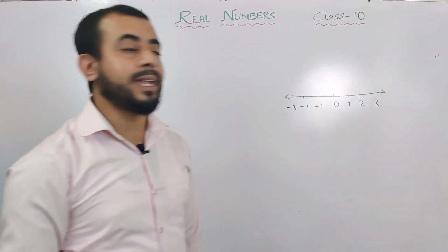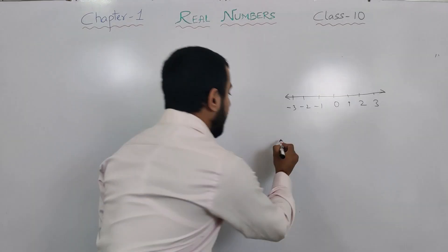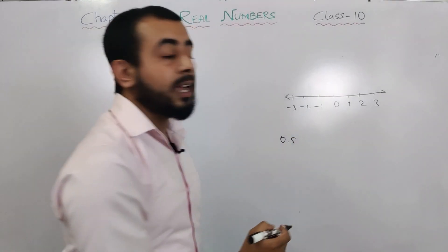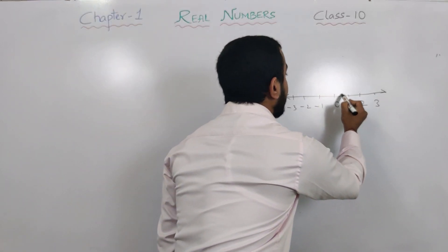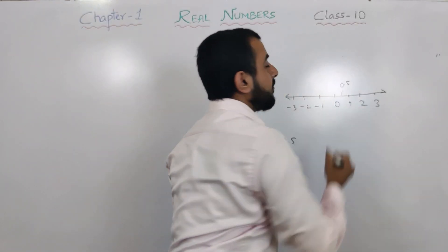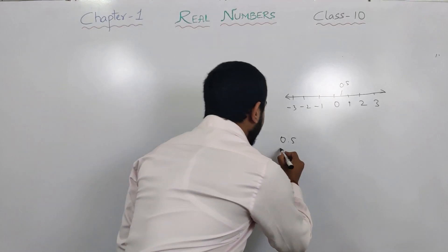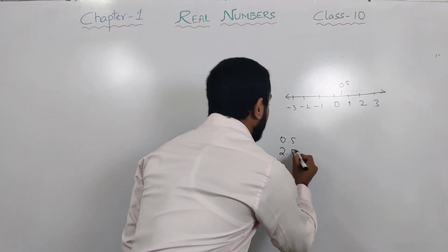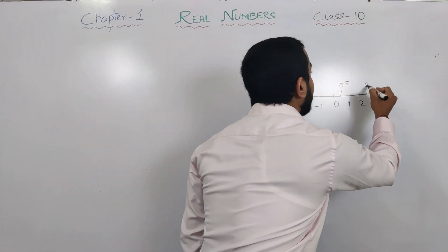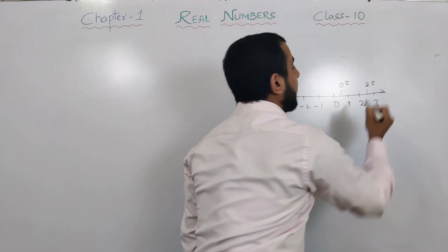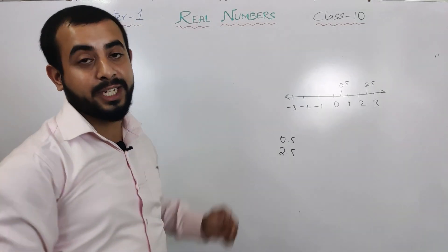If someone tells you to find where 0.5 is, you go in between 0 and 1 and mark the middle as 0.5. And if somebody asks you to find where 2.5 is, you go in between 2 and 3 and mark the middle as 2.5. This is the number line concept of real numbers.